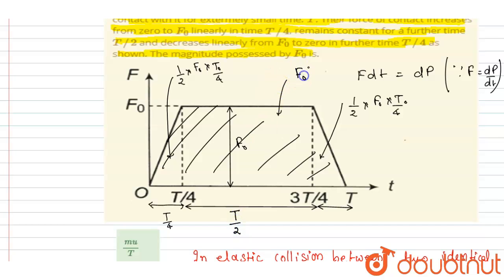This length is t by 2, so this will be a rectangle. Area will be this. Now you can add them. If you see, this is ft by 8, this is also ft by 8, so it will be ft by 4. So total area will be f naught t by 2 plus this will be ft by 4.